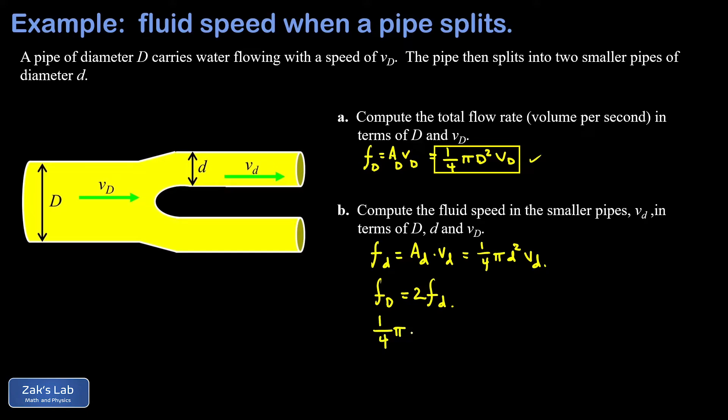One quarter π diameter squared times the fluid speed in the big part of the pipe, that's got to be equal to twice the flow rate in one of the little pipes that it's split into. So that's twice one quarter π little diameter squared v_d. So we can cancel out the one quarter and the π.